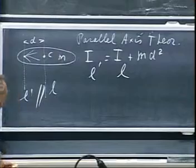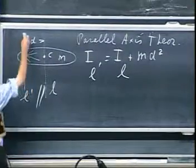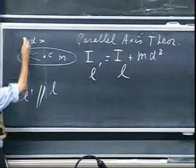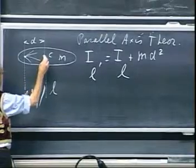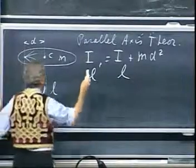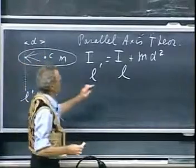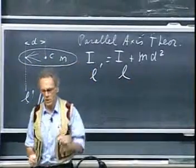then, of course, you can always use it to your advantage. Notice that the moment of inertia for rotation about this axis, which is not through the center of mass, is always larger than the one through the center. You see, you have this MD squared. It's always larger.